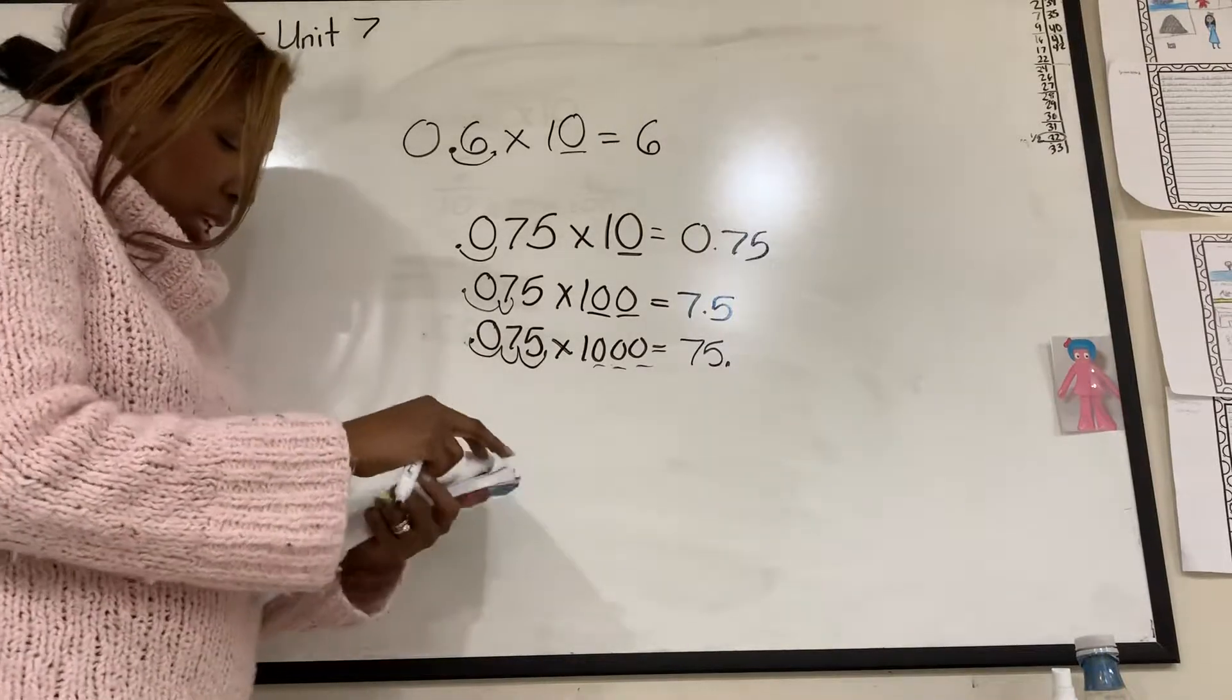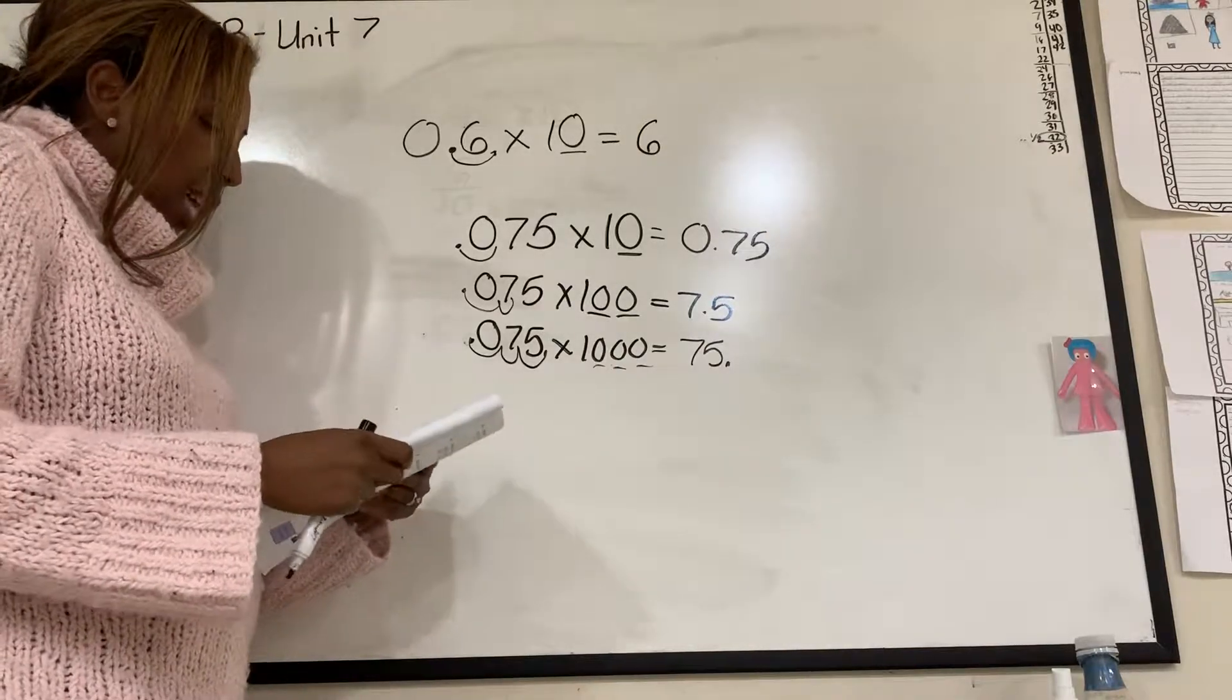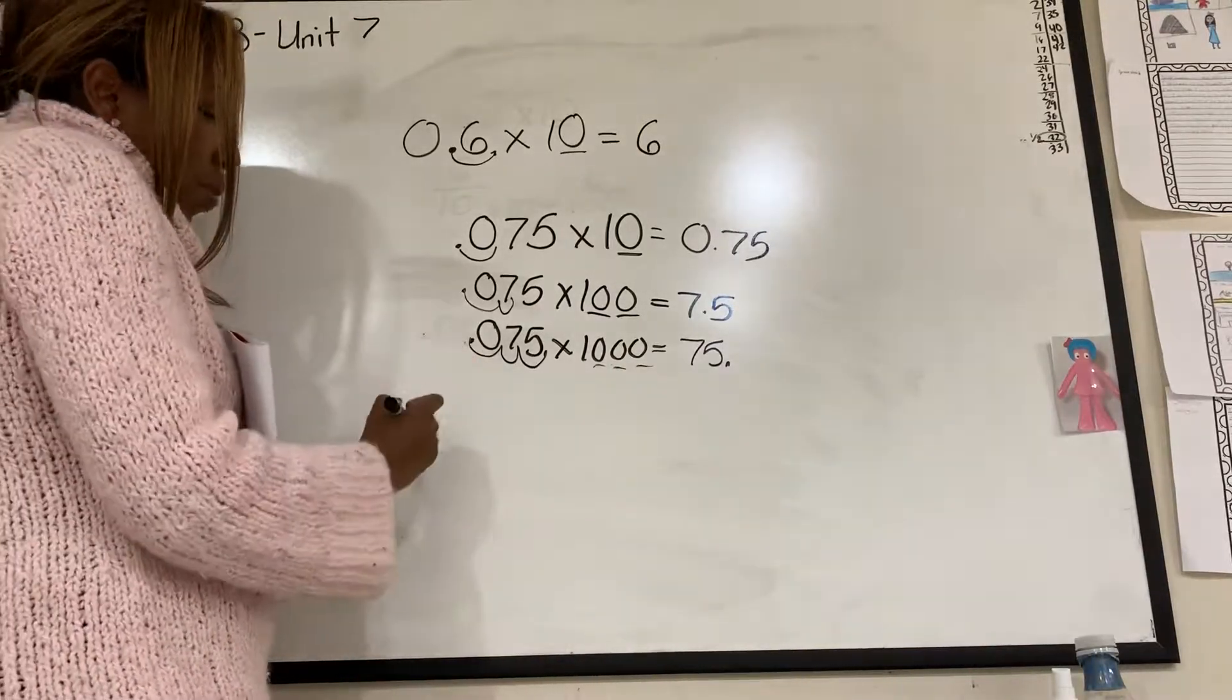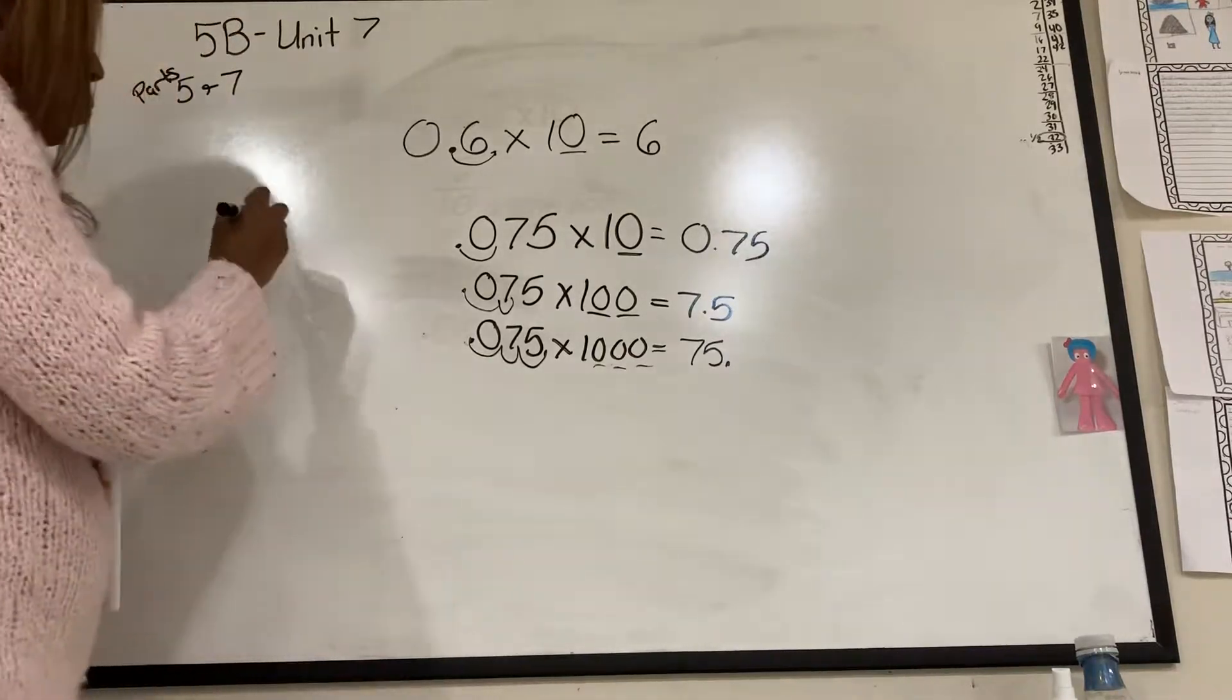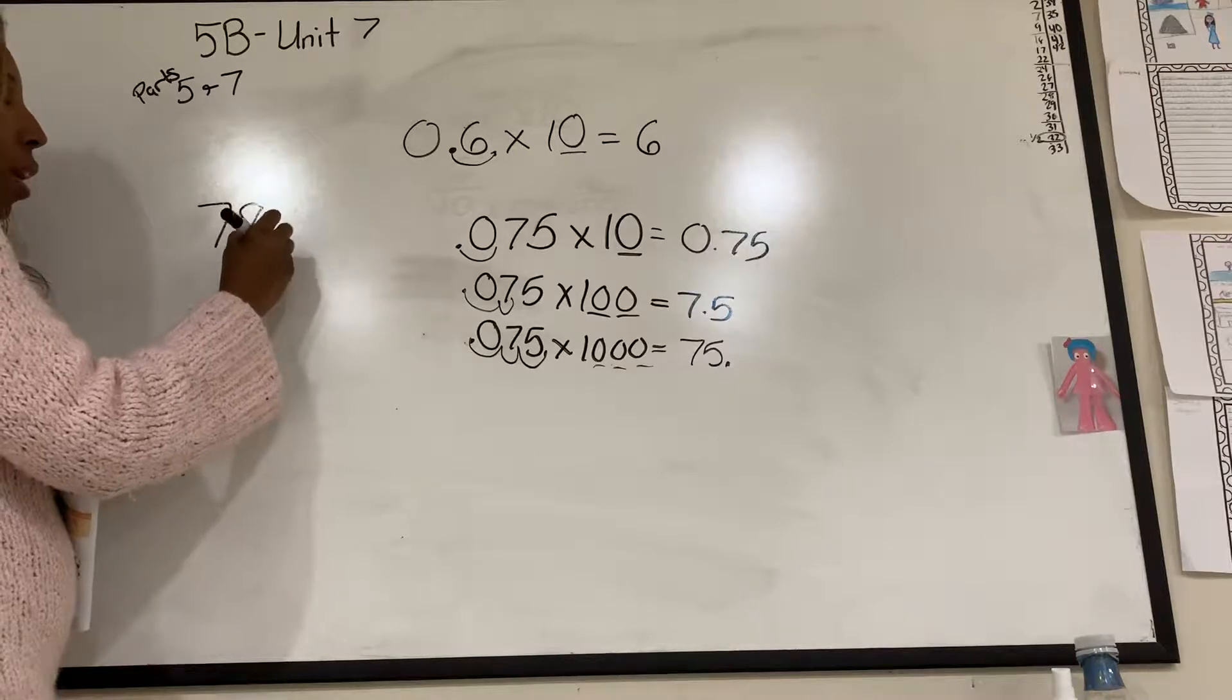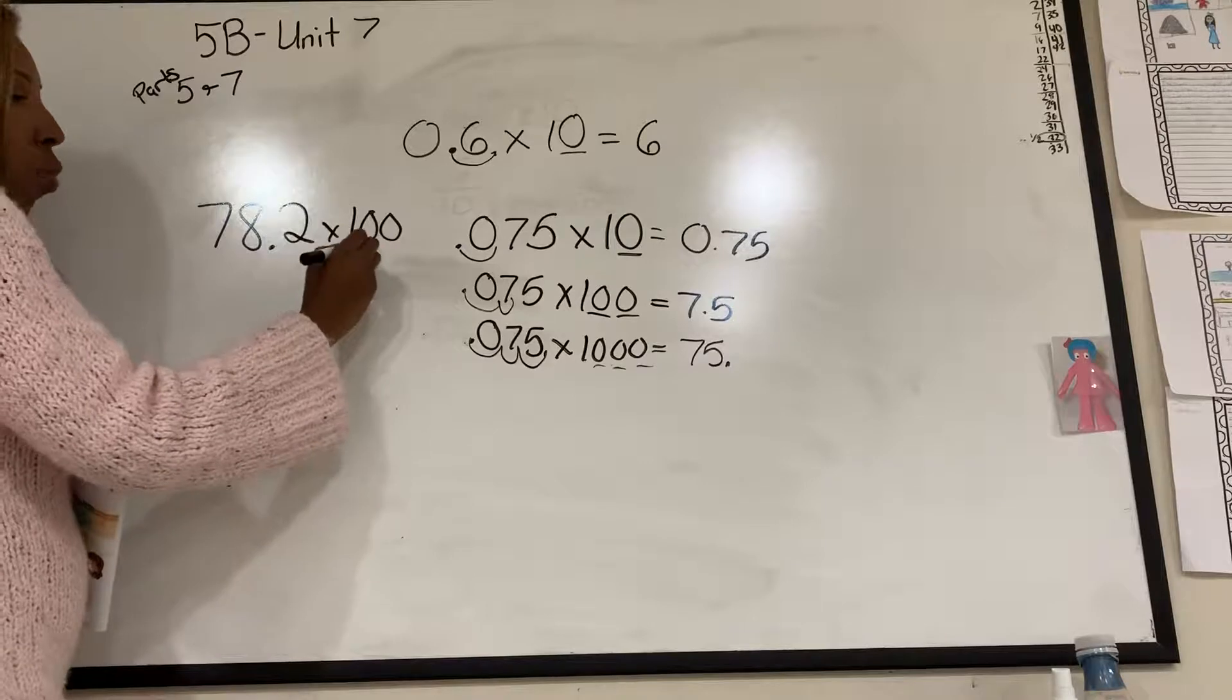Now, if we have, let's say, a number that's maybe 78.2 times 100. We'll have one, two zeros. So I'm going to move it from there one, two.